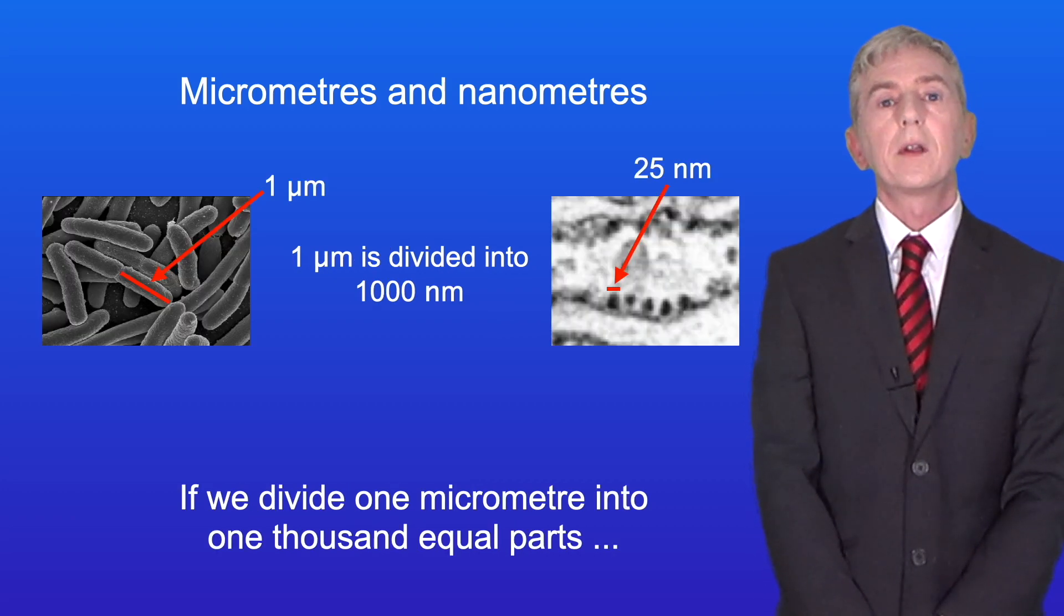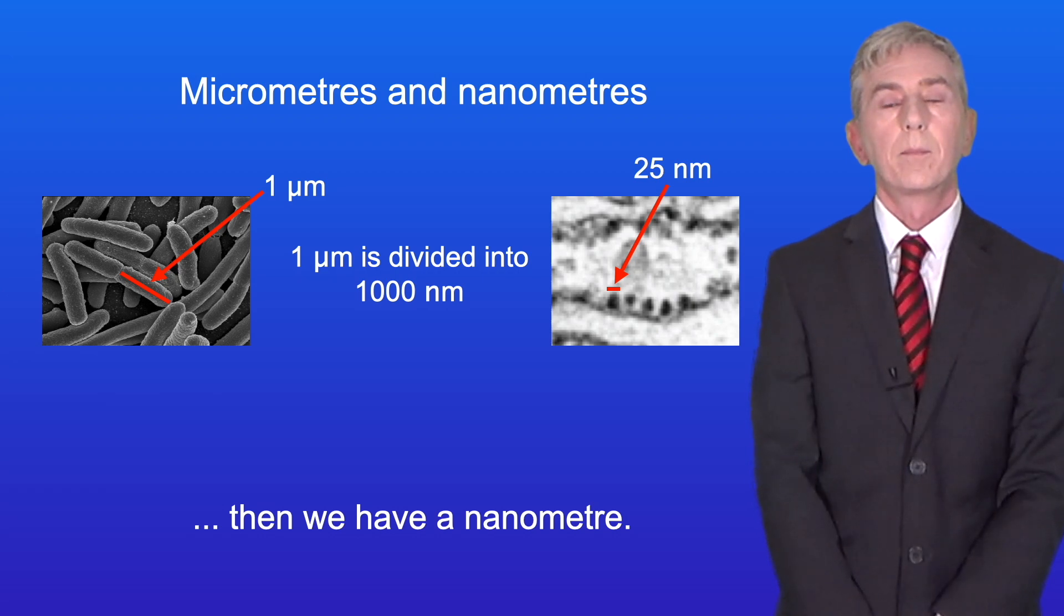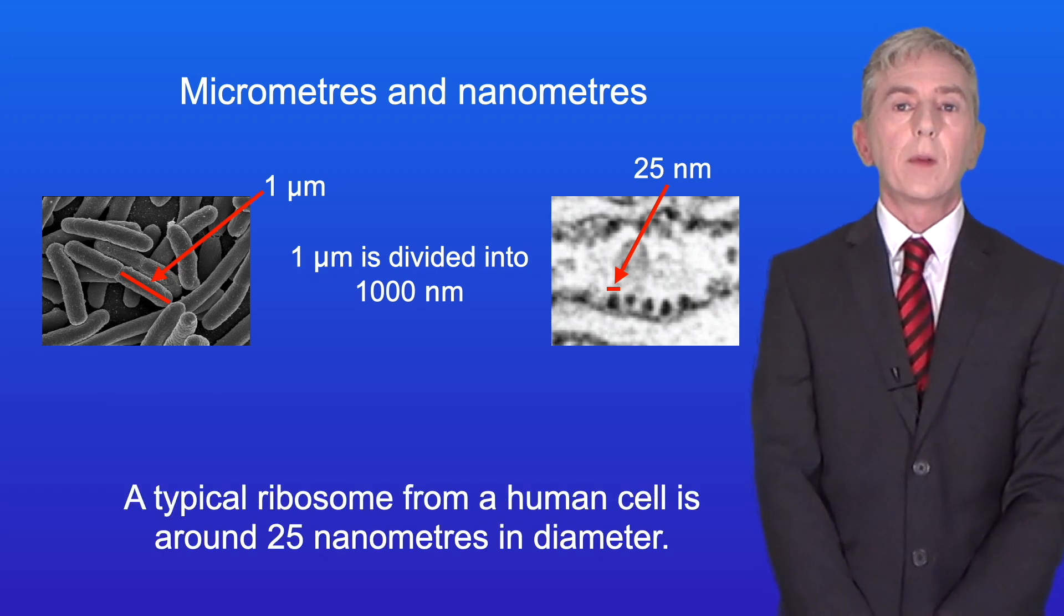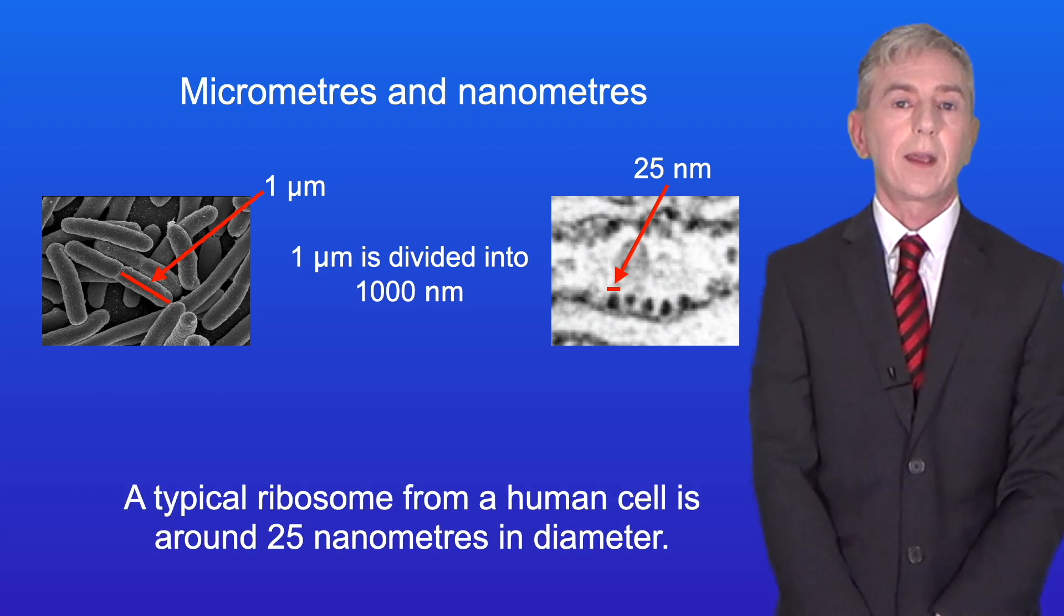If we divide one micrometer into one thousand equal parts then we have a nanometer. A typical ribosome from a human cell is around 25 nanometers in diameter.